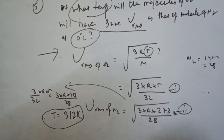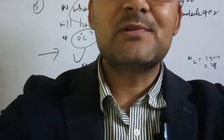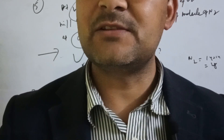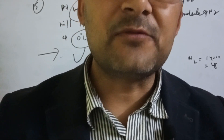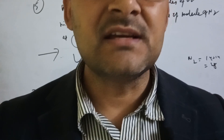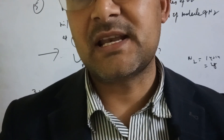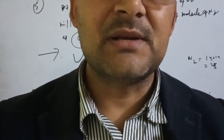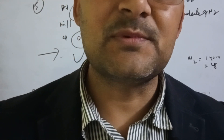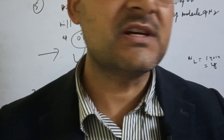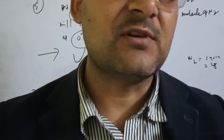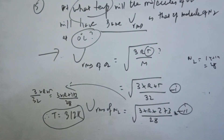We have solved problems on the three types of molecular velocities: most probable velocity, average velocity, and root mean square velocity. This concludes our session. Namaskar!